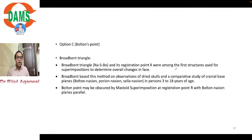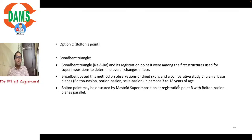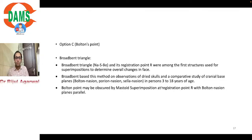Broadbent's triangle uses sella, nasion, and Bolton point. Point R is where the perpendicular from sella meets the Bolton-nasion plane. He conducted his studies from age 3 to 18 years.